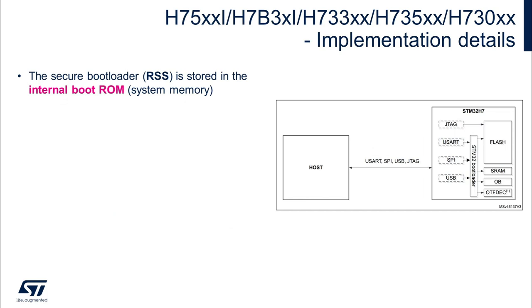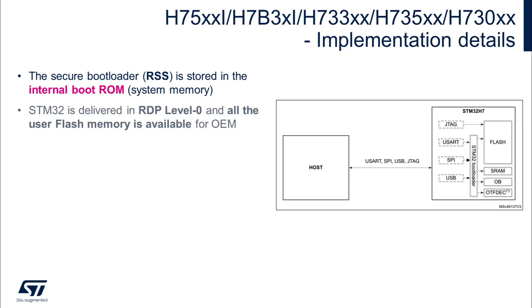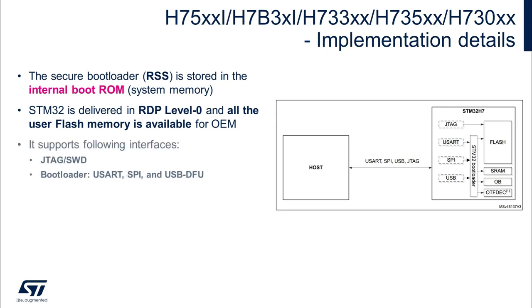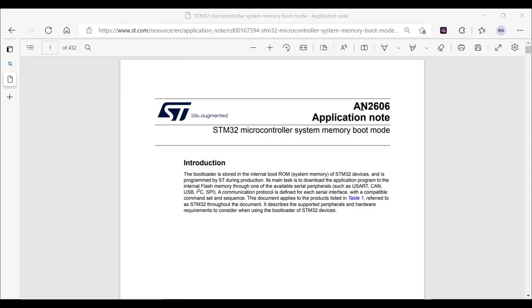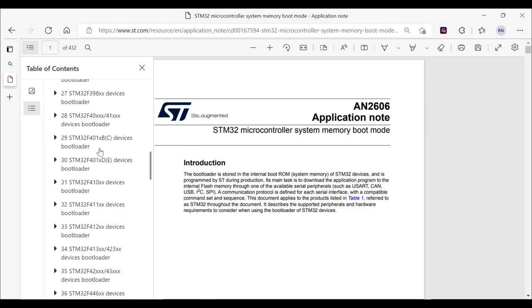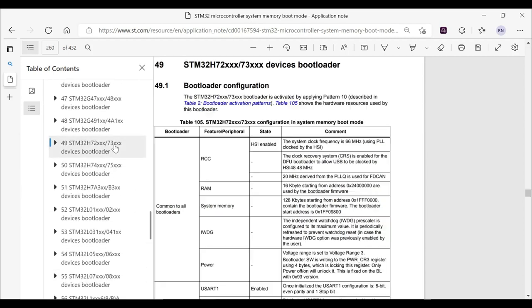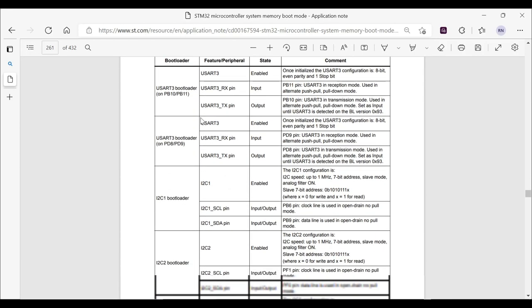Let's start with STM32H7. In this configuration, the system bootloader is expanded with secure functionalities — RSS services — which are needed to perform SFI. The RSS-enabled secure bootloader is stored in the internal boot ROM, so the whole STM32 flash is therefore available for the OEM application code, and the part is delivered at RDP level 0. The SFI process in STM32H7 can be performed over various interfaces like USART, SPI, USB DFU, in addition to JTAG and SWD. All the information related to the STM32 bootloader is available in Application Note AN2606 on st.com.